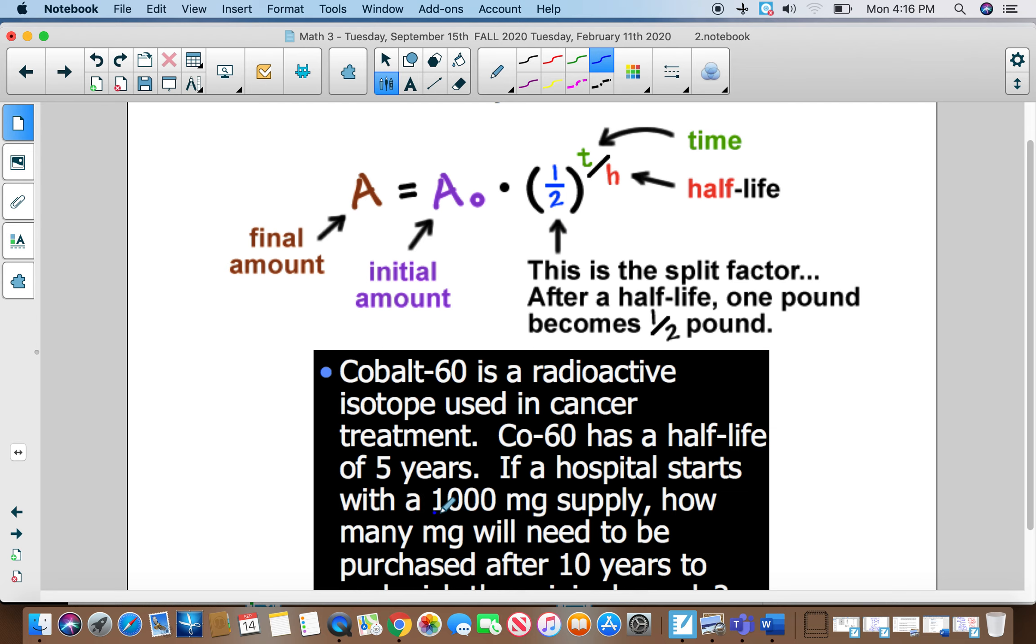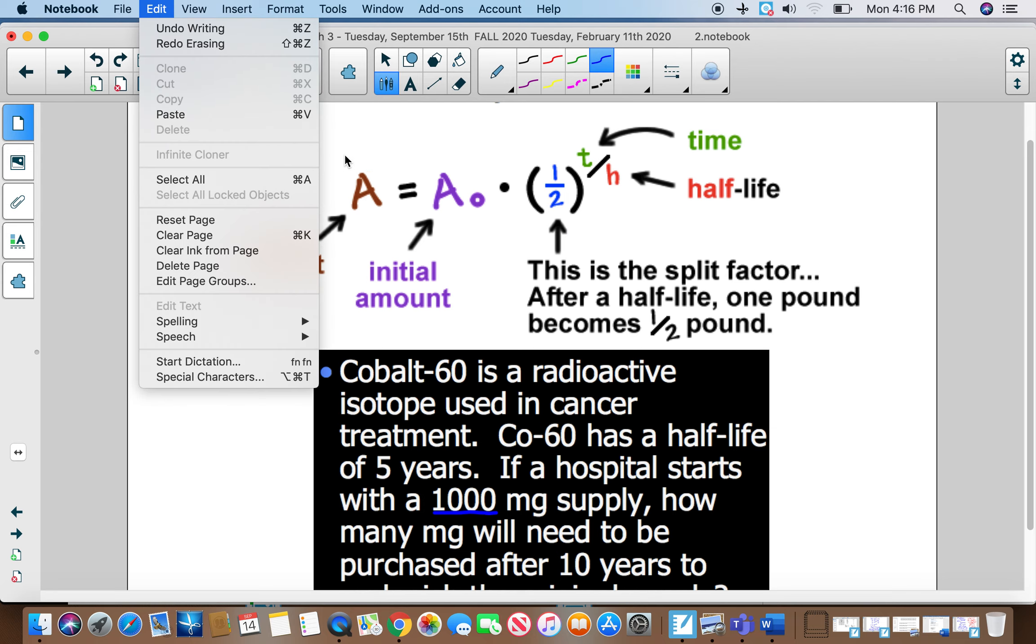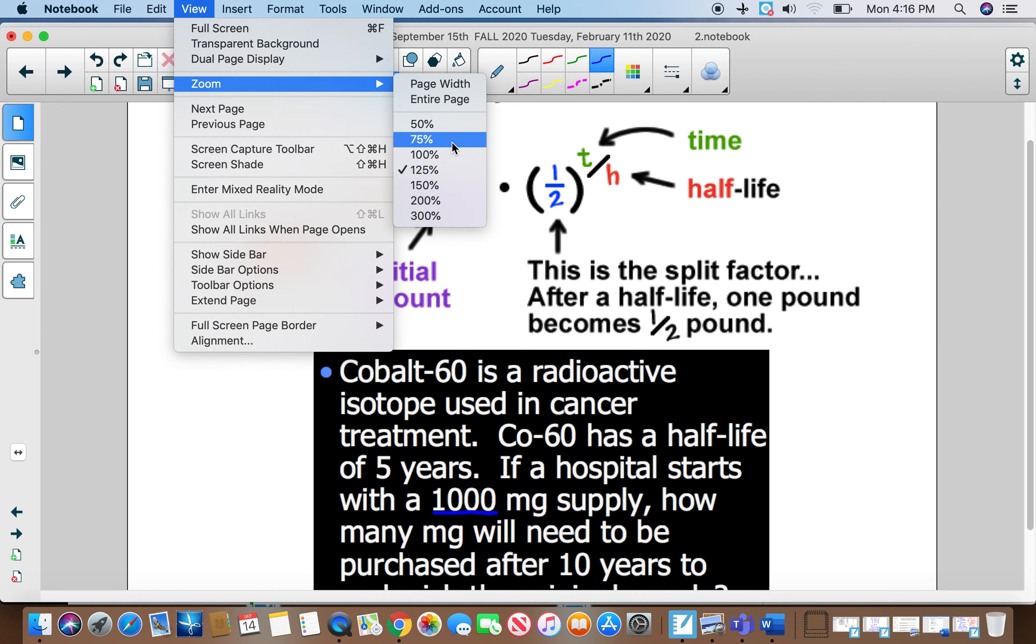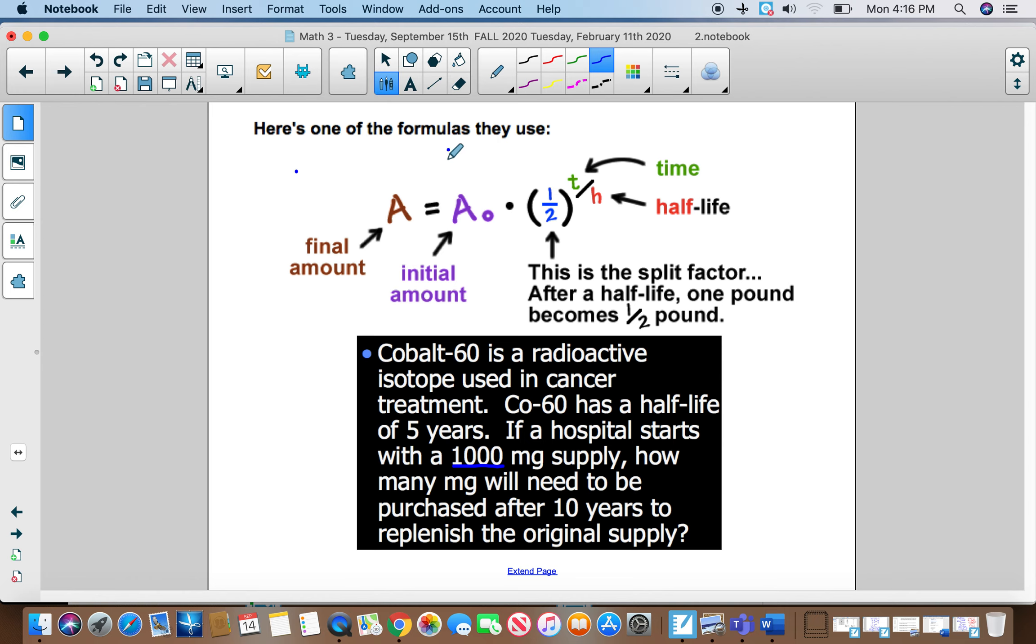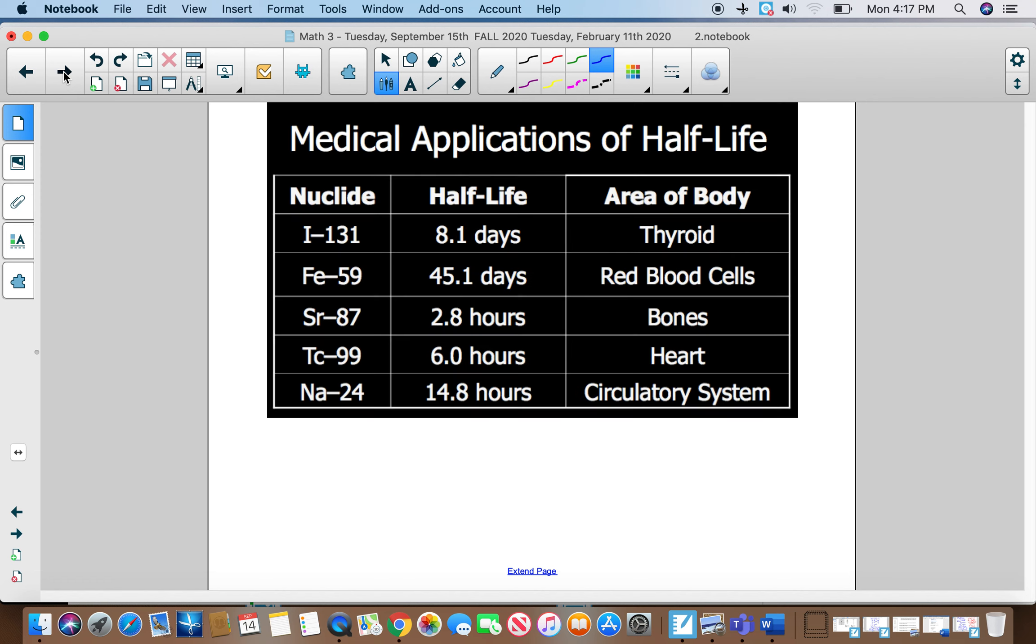Try this one. On this one, we start with 1,000. I'm going to make this a little smaller because it looks really big. We start with 1,000, so we put 1,000 here. It's going to be one half. And it says Cobalt-60 is a radioactive isotope used in cancer treatment. It has a half-life of five years. If a hospital starts with a 1,000 milligram supply, how many milligrams will need to be purchased after 10 years to replenish the original supply? So we're going to do 10 divided by 5, because 5 is the half-life. So we're going to do 1,000 times 0.5, and then 10 divided by 5 is just 2. So we're going to raise it to the second power. So in this one, we get 250. And then make sure you put milligrams—250 milligrams.